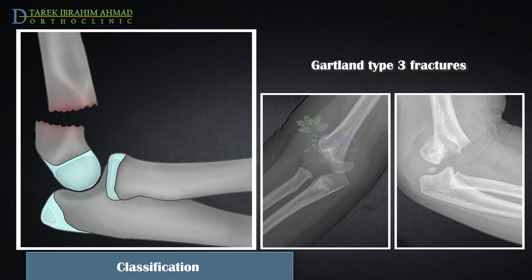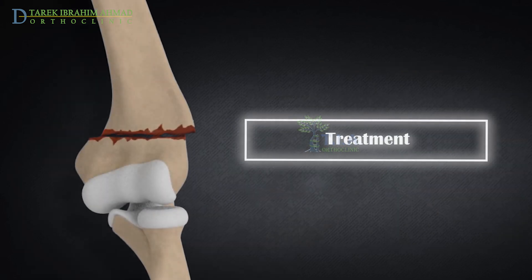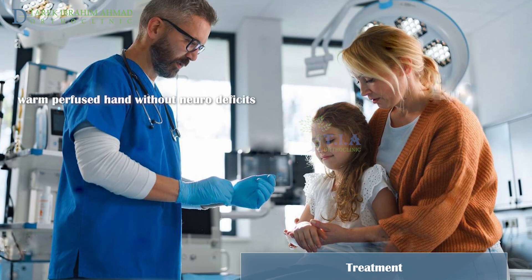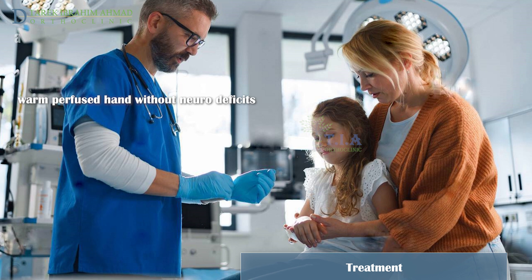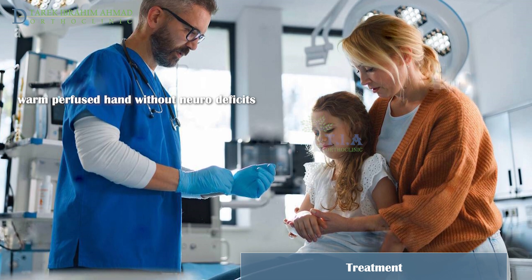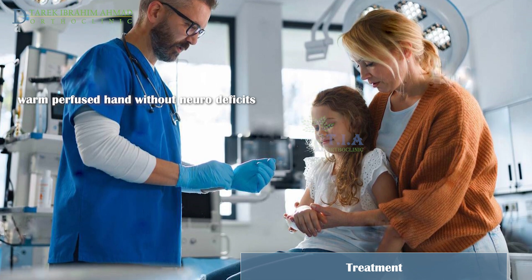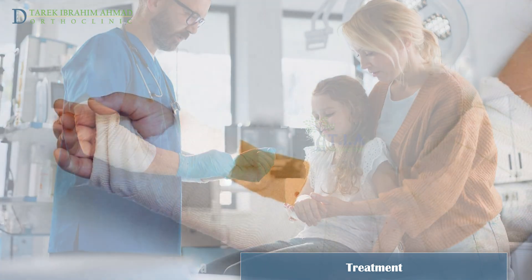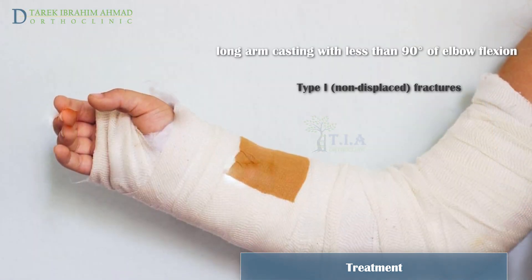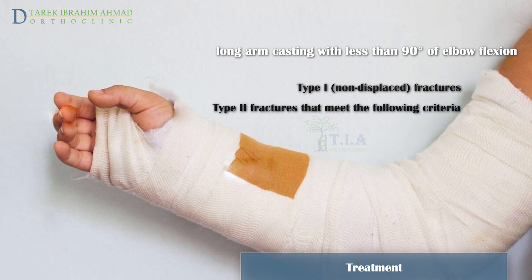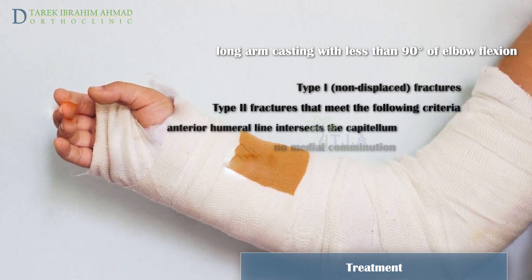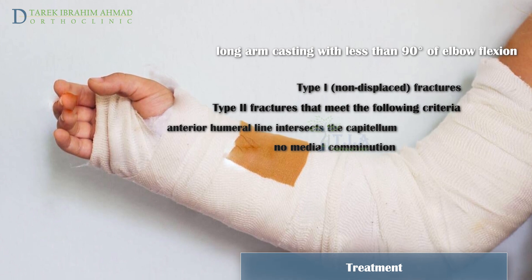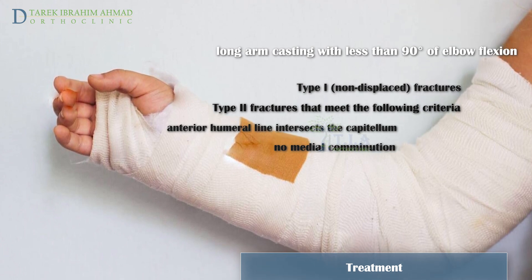Regarding treatment: for children with adequate distal circulation and no sign of compartment syndrome, definitive care is determined by the degree of displacement on plain radiographs. Patients with a non-displaced Type 1 fracture may be immobilized using a posterior splint. The splint should extend from the wrist to the axilla with the elbow at 90 degrees of flexion.